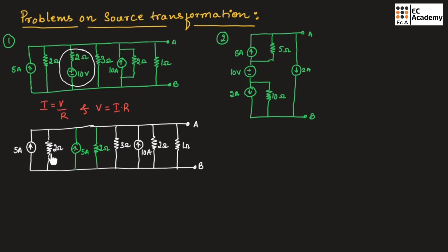Now the current sources are in parallel, so we can add all these current sources. These resistors are connected in parallel, so we can apply the parallel formula for these resistors to find the equivalent resistor.